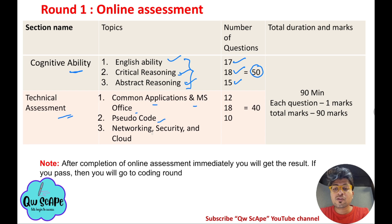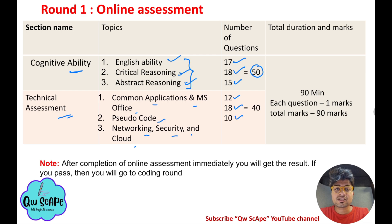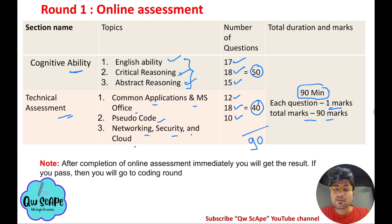For MS Office there are 12 questions, for pseudo code there are 18 questions, and for networking, security, and cloud there are 10 questions — totalling 40 questions for technical assessment. For cognitive ability: English ability has 17 questions, critical reasoning has 18 questions, and abstract reasoning has 15 questions — totalling 50 questions. Overall there are 90 questions and you get 90 minutes, with each question worth 1 mark.